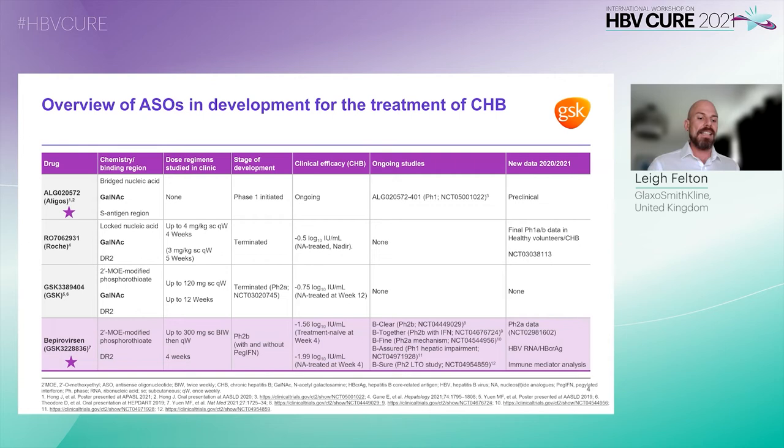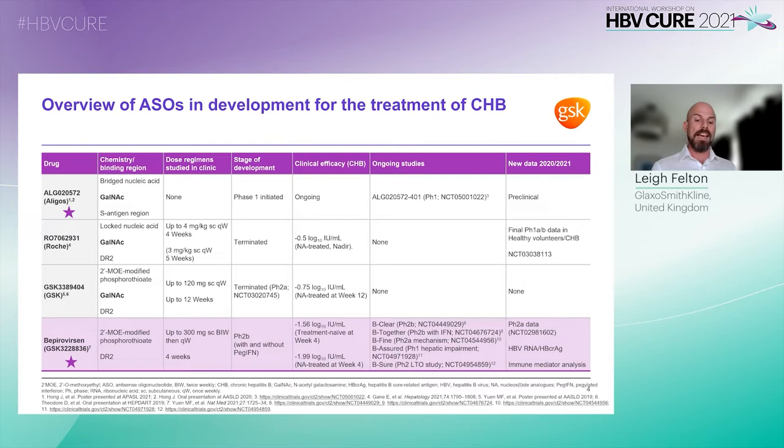This next slide summarizes ASOs currently or recently in clinical development for the treatment of CHB. Stars indicate the ASOs with ongoing clinical development activities. Three of these ASOs are GalNAc conjugated and they utilize a variety of wing chemical modifications.